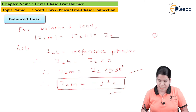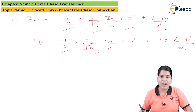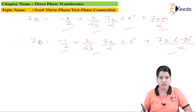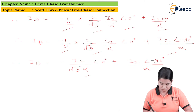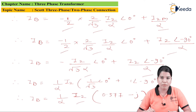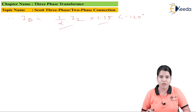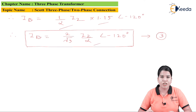Substituting I2M from equation 1: IB equals minus half times 2 divided by root 3 times I2 divided by alpha at 0 degrees plus I2 at minus 90 degrees divided by alpha. Simplifying: IB equals minus I2 divided by (root 3 times alpha) at 0 degrees plus I2 at minus 90 degrees divided by alpha. Converting to rectangular form: IB equals (1 divided by alpha) times I2 times (0.577 minus j). Converting to polar form: IB equals (1 divided by alpha) times I2 times 1.15 at an angle of minus 120 degrees, which equals 2 divided by root 3 times I2 divided by alpha at minus 120 degrees.